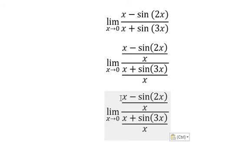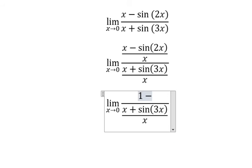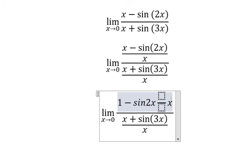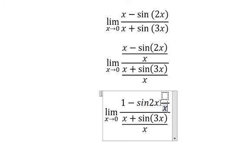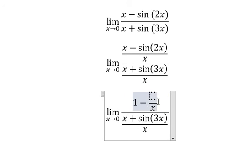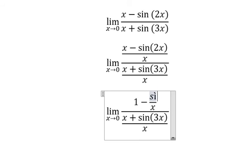Next, x divided by x, this one divided by x, similar for the denominator. So you get 1 minus sin(2x) over x. Similar for this one.